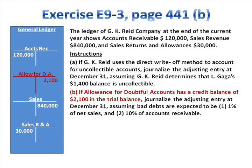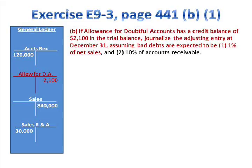Is that the normal balance? Allowance for Doubtful Accounts is a contra-asset, contra-receivables. Its normal balance is credit. So we've got a $2,100 normal balance. Continuing with the exercise instructions: journalize the adjusting entry at December 31st. We need to know what adjusting entry to make, and there are two situations we can encounter. First, in letter B, what if bad debts expense is expected to be 1% of net sales?